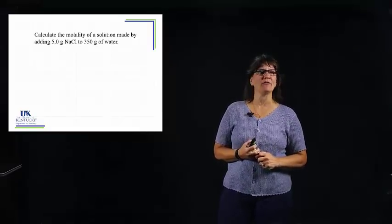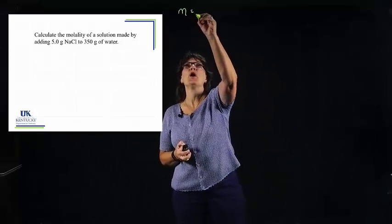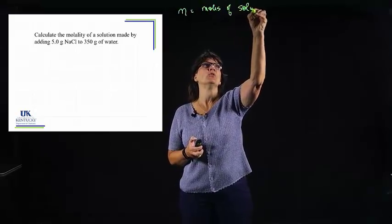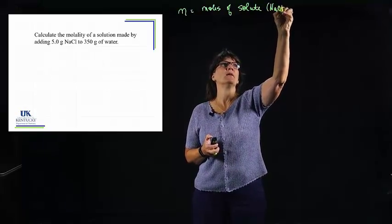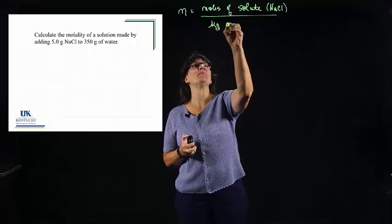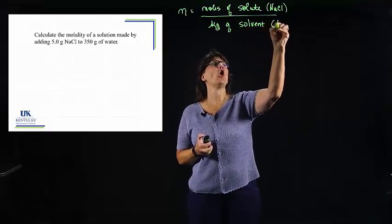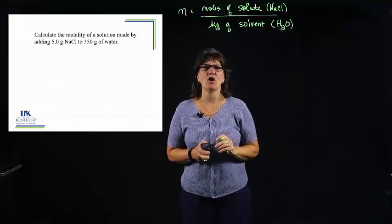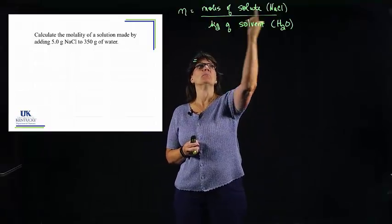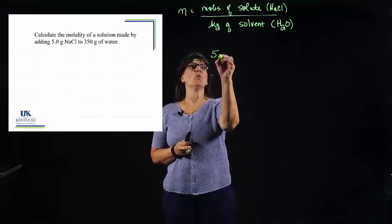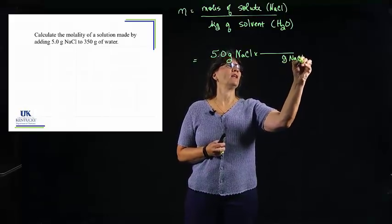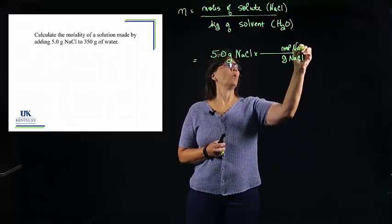If we're going to calculate the molality, we have to first notice that it says molality and not molarity. We always start with the equation: the numerator is moles of solute — the thing being dissolved, in this case sodium chloride — divided by kilograms of solvent. In almost all cases, our solvent is water, so assume water is your solvent unless told otherwise. To get the moles of solute, we start with 5 grams of sodium chloride and convert to moles.